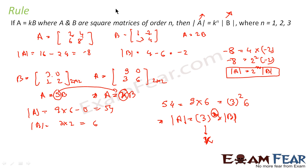The only thing changing is k — k has gone from 2 to 3, but n is always the same. I hope with these two examples you will remember this formula: if matrix A equals k times matrix B of order n, then determinant of A is k to the power n into determinant of B, where A and B are square matrices of order n.